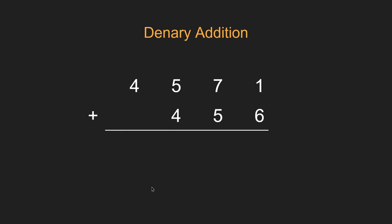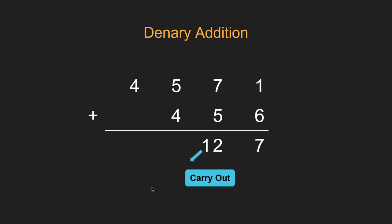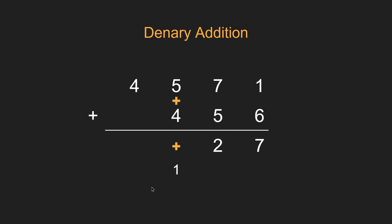Before we jump into binary addition, let's have a quick review on how normal human addition works. So let's say we're adding these two numbers together. We're going to start at the right hand side and add — let's call them inputs A and B — so we're going to add 1 and 6 together. 1 plus 6 makes a sum of 7. It's not gone over 10 so we don't carry anything. Now 7 plus 5 makes 12, so we just carry the 1 over — the bigger number over to the next one. This is called the carry out.